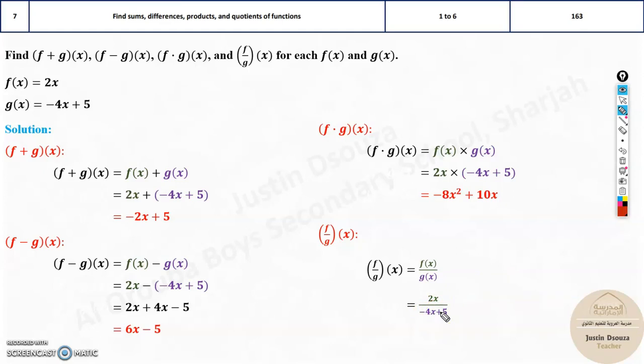How will you find the undefined value of x over here in this case? All you need to do is, whatever is the denominator, just equate it to 0. Just make it equal to 0. So what is going to happen? Take 4x to the other side, make it positive. So 5 equals 4x, and 4 goes to the other side. It will be 5 by 4 equals to x.